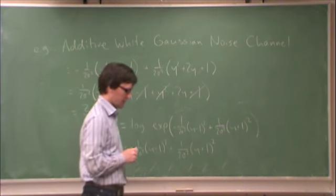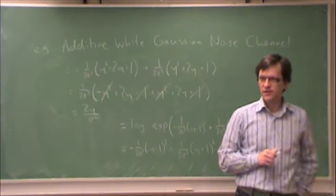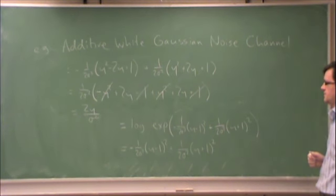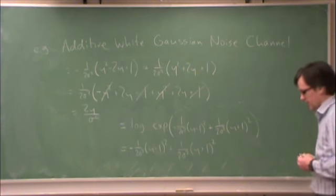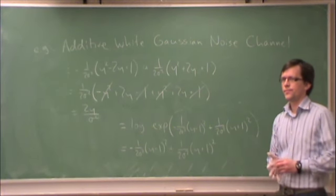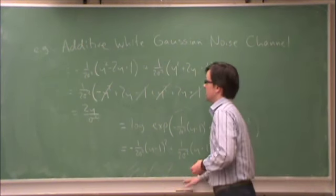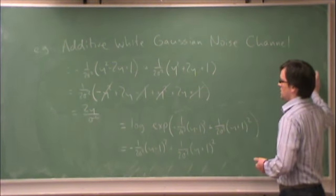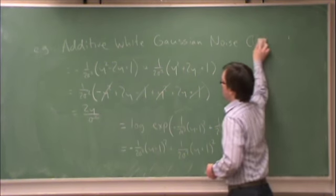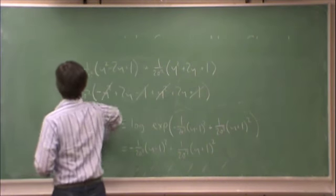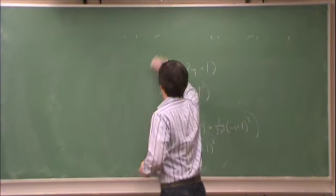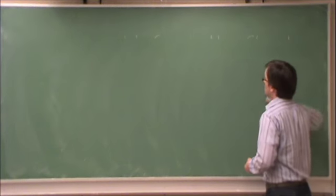So in other words, if you have a Gaussian channel and you know the variance, the log likelihood ratio is just 2y, whatever you observe, 2 times y divided by the variance. Alright, any questions on that? Let's take a look at an example, a decoding example.